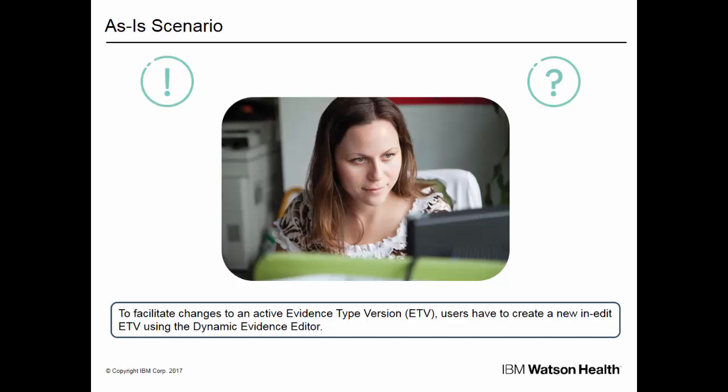Taking the label example, this means that caseworkers will see the new label if entering the evidence after the new ETV takes effect. However, they will still see the old label on any retrospective changes. This may cause even more confusion.